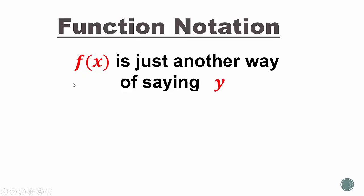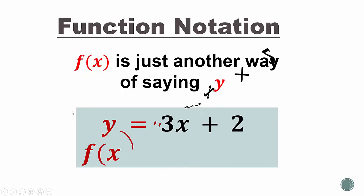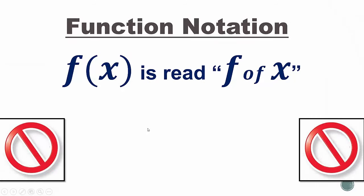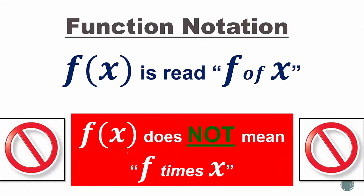What you used to see is something like y equals 2x plus 1. What you're going to see from now on is f(x) equals 2x plus 1. The only thing that changes is we're changing the y, and we're saying that f(x) is basically the same as y. We call that function notation. It's just another way of saying y. This is read f of x, and what you need to be careful of is that it is not f times x. Just because you see that parentheses there doesn't mean you're doing f times x. It means f of x. Remember, it's replacing the y.